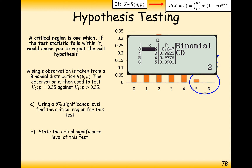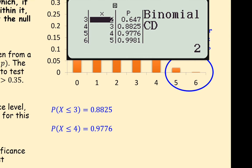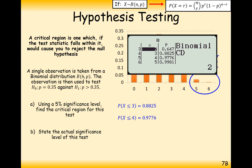Go to binomial CD mode, go to list, and type in a bunch of numbers that will give a cumulative probability of approximately 95%. Type in 6 as your number of trials and 0.35 as your probability. We get key values: the probability of being less than or equal to 3 is 0.8825, and the probability of less than or equal to 4 is 0.9776.